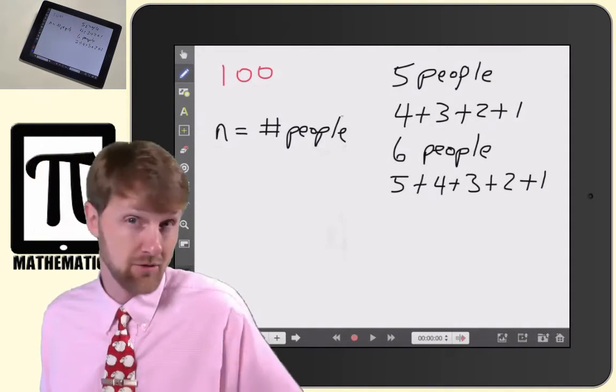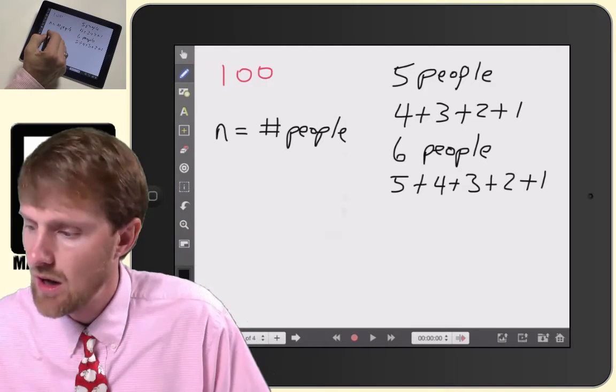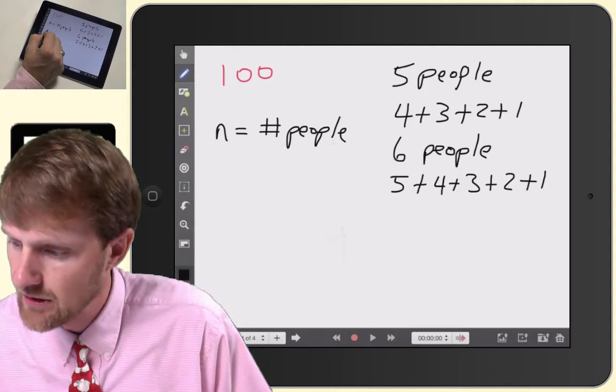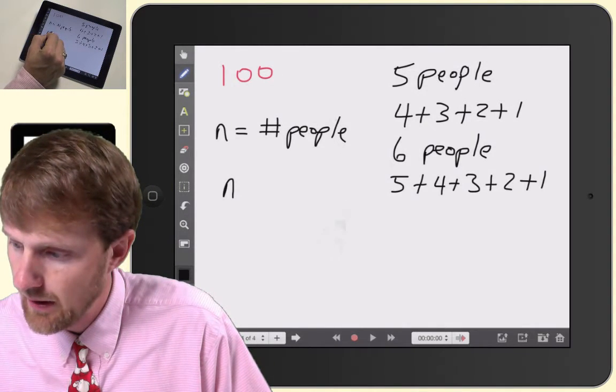n being n equals the number of people. So if n equals the number of people,